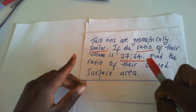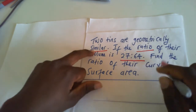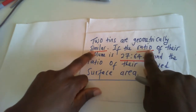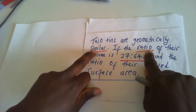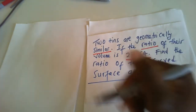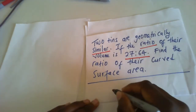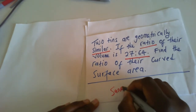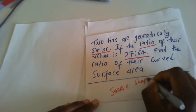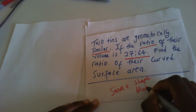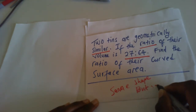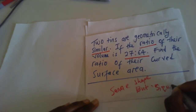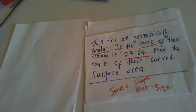The most important thing we need to know is what 'similar' means and how ratios work. Two objects are similar if they are of the same shape but different sizes.